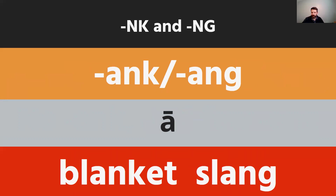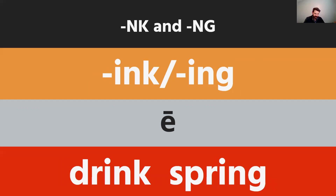We do get some special sounds with A-N-K and A-N-G combinations. We might predict a short A sound following phonetic skill two, but in fact they make the long A sound. When you see the A and notice there's an N-K or N-G right after it, loop them together with an arc — that's a special vowel combination. So 'blanket' and 'slang' are special vowel combinations. Similarly, I-N-K and I-N-G are special vowel combinations: instead of making a short I, they make the long E sound. So 'drink' and 'spring' — you'd mark the vowel, notice the N-K or N-G, and put an arc to remind yourself it makes that special sound.